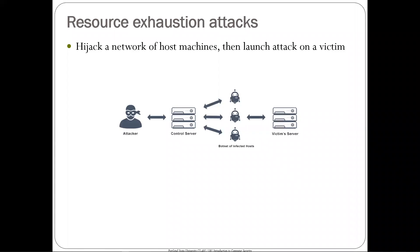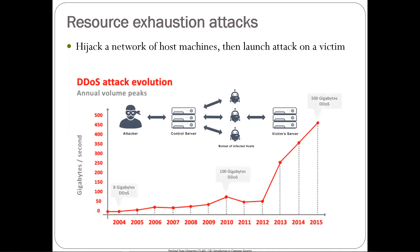The problem with distributed denial of service is that the capacity the adversary has available has just gone way up. This is because we're shipping a whole bunch of vulnerable devices out there that nobody is patching or changing their usernames and passwords on. So at the disposal of an adversary is just an enormous amount of network capacity.